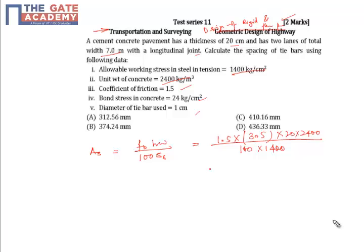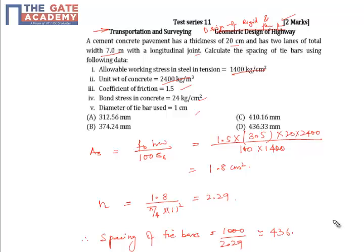So it comes out to be 1.8 centimeter square. So number of bars would be 1.8 divided by π/4 × 1 square, that is 2.29. So spacing of tie bars would be 1000 divided by 2.29, that is 436.33 mm. So final answer is 436.33 mm.